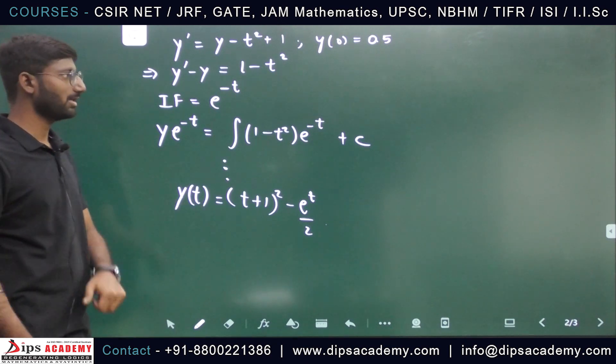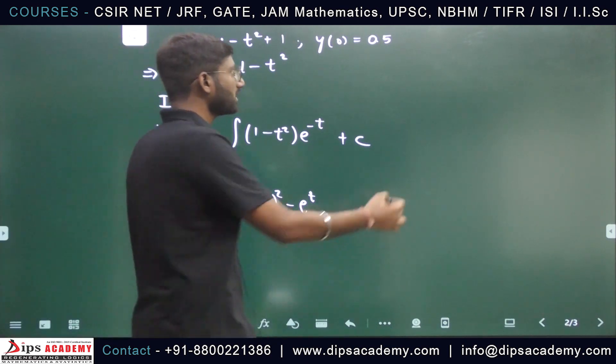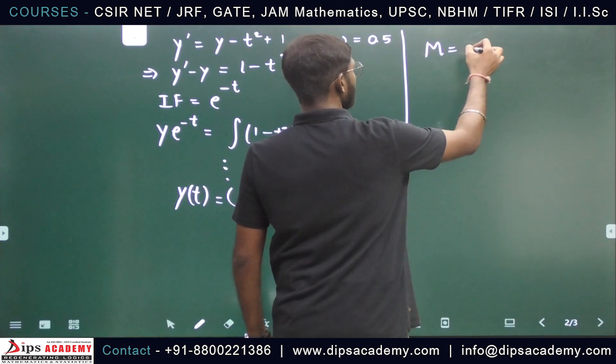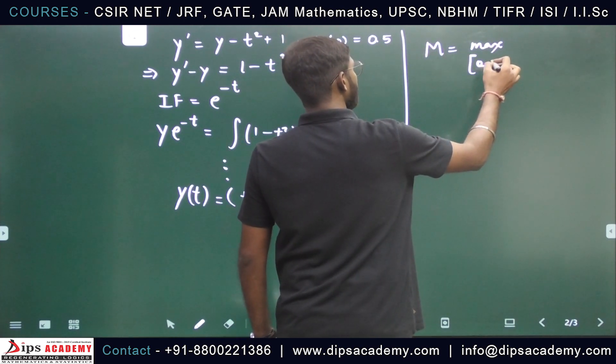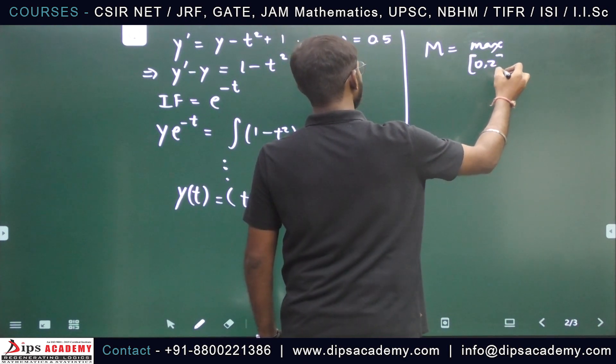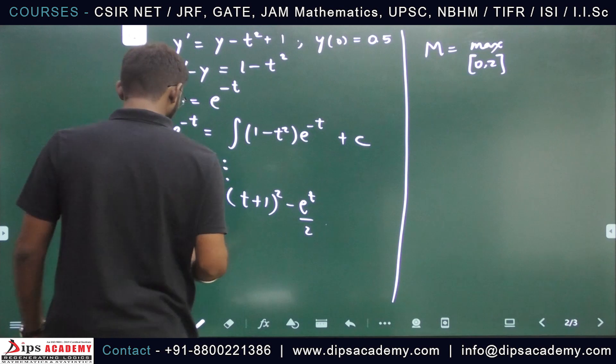Now let's talk about capital M, which is nothing but maximum of y double dash over 0 to 2. So maximum of y double dash.